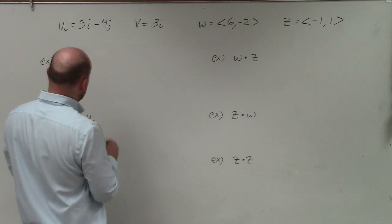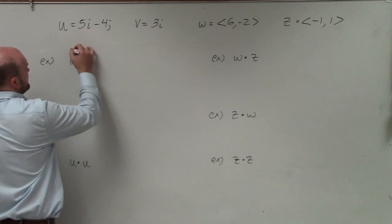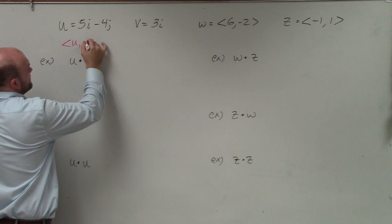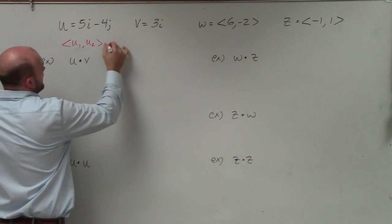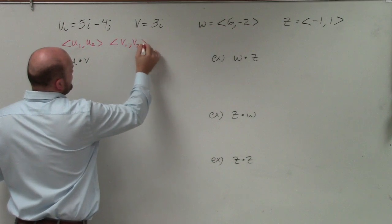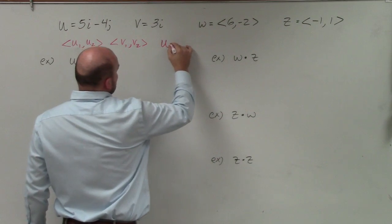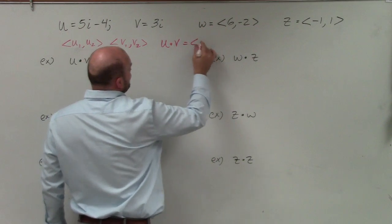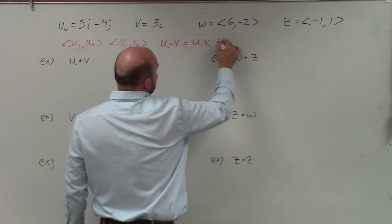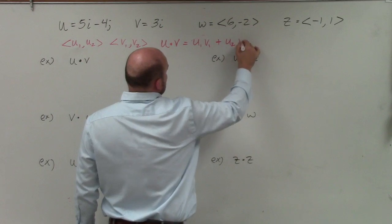So if we were given two vectors, u and v, a common way we could think of this would be like a common vector u1 comma u2 and another vector v which would be v1 comma v2 as their two components. The dot product of u dot v is simply, not a vector, u1 dot v1 plus u2 dot v2.